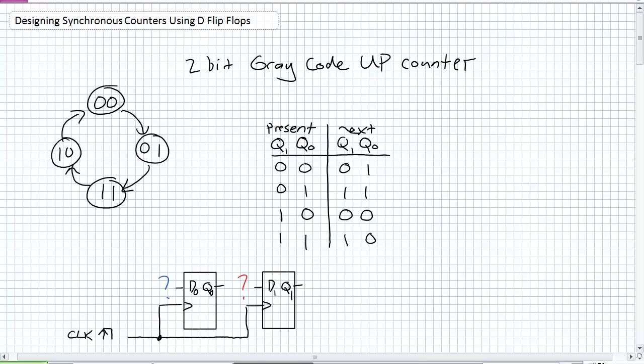This first example is our 2-bit gray code up counter. There are no external inputs — it's just a Moore machine. Its next state is dependent upon its present state only. So we've got our present input, we can determine our next state, and what I've drawn here on the bottom is D flip-flops. There's only one input, whereas a JK flip-flop has two inputs and four different modes.